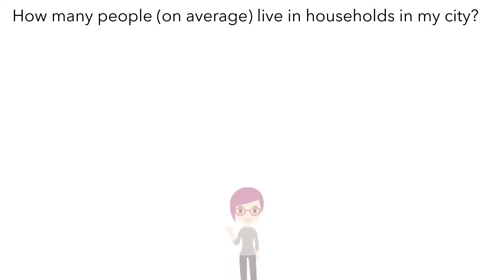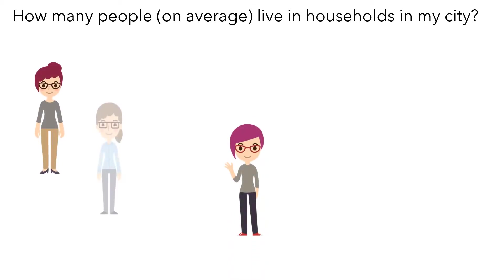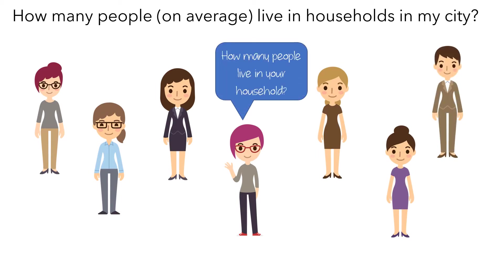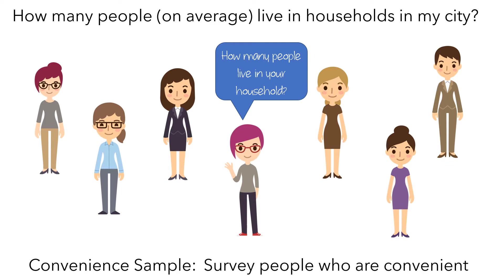Maybe you could step outside your house and see a bunch of people walking by, so you ask each of them how many people live in your household. But you notice they all look a lot like you, and the number of people they live with will probably be similar to you and to each other. This method is called a convenience sample, where you survey people who are conveniently located. This has the benefit of being fast and easy, but the results will typically not be representative of the overall population, so you should generally avoid it.